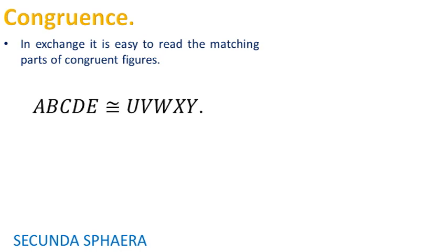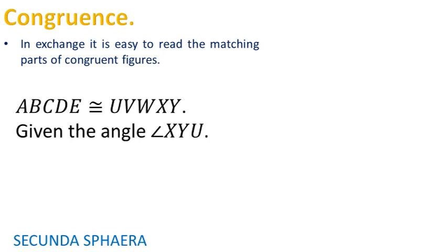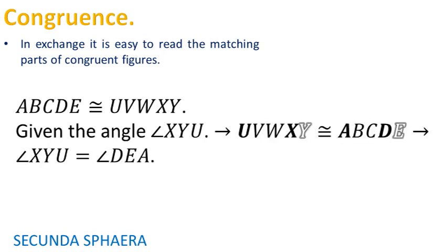If the pentagon ABCDE is congruent to the pentagon UBWXY, given the side EA, the sides EA and YU are equal. Also, given the angle XYU, the angles XYU and DEA are equal.